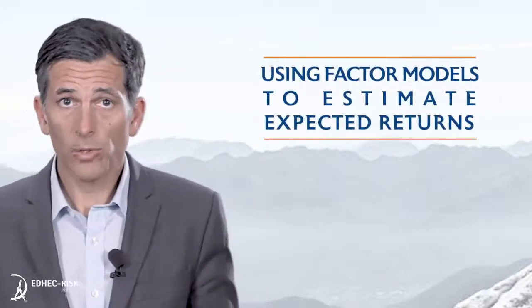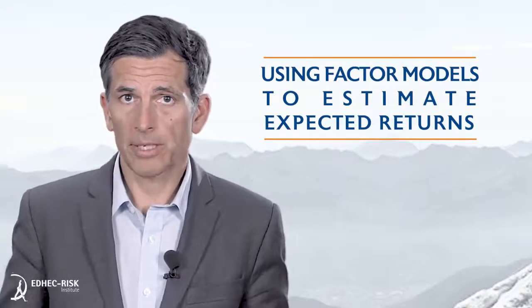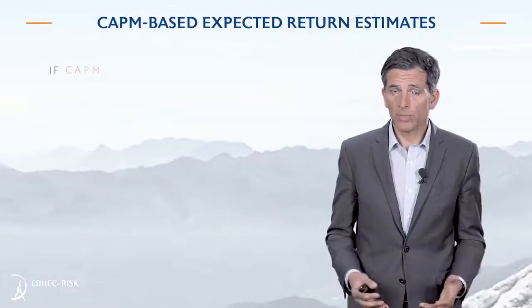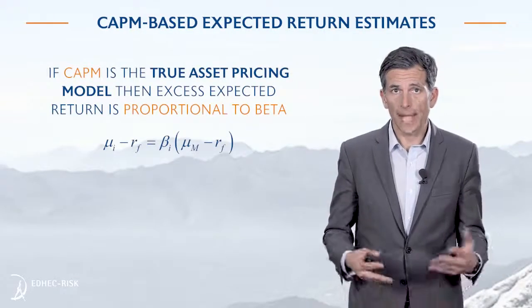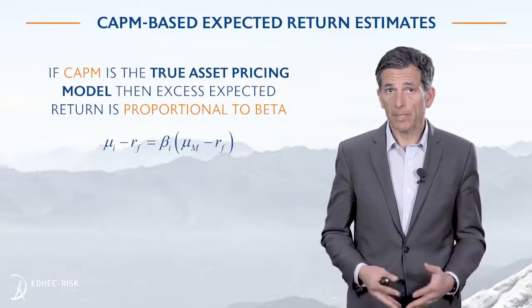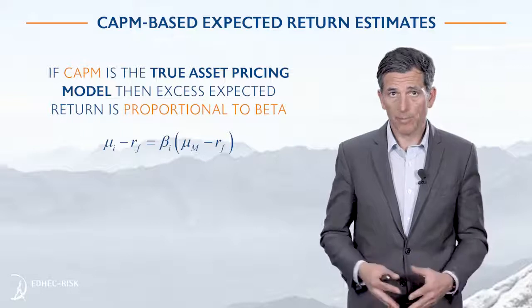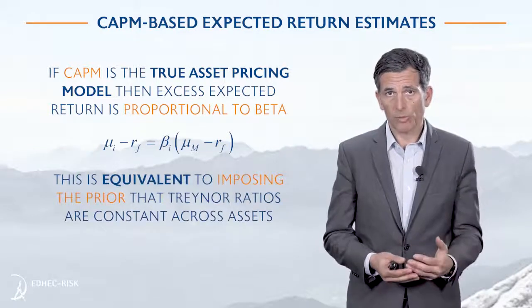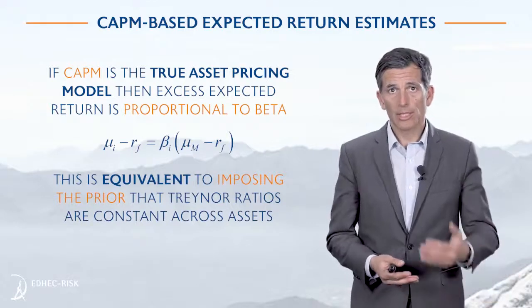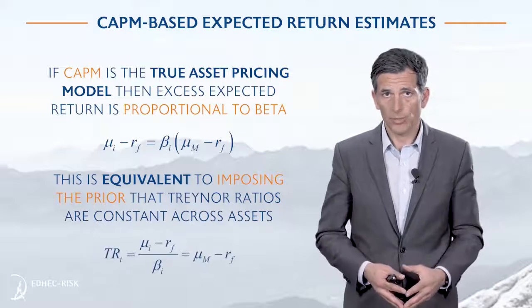Welcome back. Today we are going to talk about how we can use factor models to estimate expected returns. The first factor model — the simplest of them all — is the capital asset pricing model, the CAPM. If the CAPM is the true asset pricing model, then we have a very simple prescription: the excess expected return for a given stock is proportional to the beta of the stock, as can be seen from this equation.